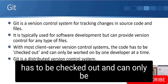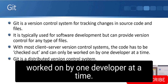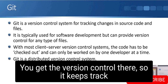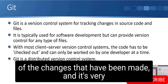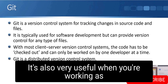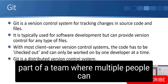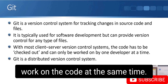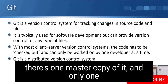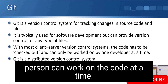With most client-server version control systems, code has to be checked out and can only be worked on by one developer at a time. Git provides version control that tracks all changes and makes it very easy to roll back to a previous version. It's also very useful when working as part of a team, where multiple people need to work on the code at the same time.